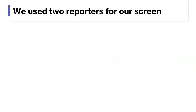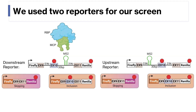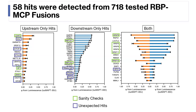With these two methods of engineering, we used two reporters for our screen: one where we place the MS2 stem loop downstream of our alternatively spliced exon, recruiting RBPs to this position, and another where we put the MS2 stem loop upstream of the alternatively spliced exon, recruiting RBPs upstream. Following the development of these reporters, we tested 718 different RBPs and ended up detecting 58 that activated at least one of the two reporters. Here we highlight some sanity checks — known splicing factors whose position dependency matches their known biology — and our unexpected hits, which are these potentially new splicing factors.